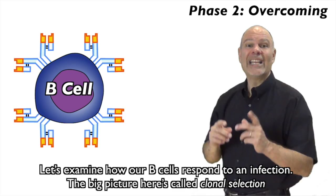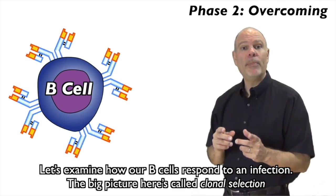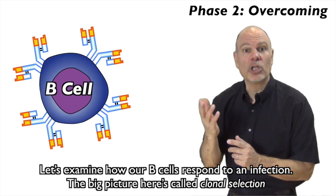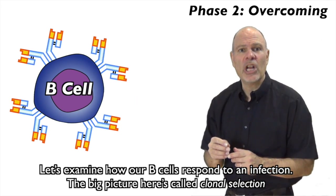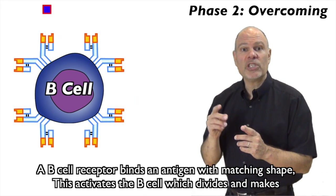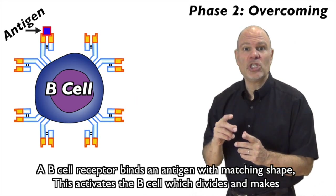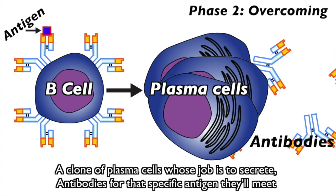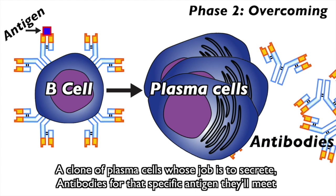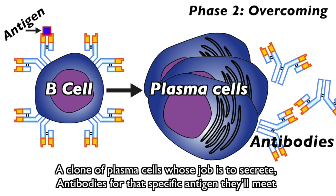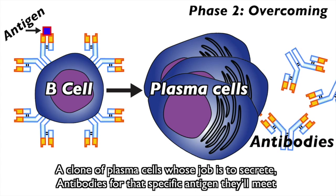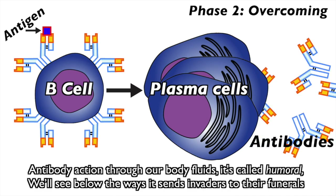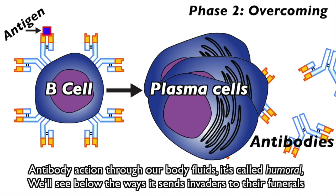Let's examine how our B-cells respond to an infection. The big picture here is called clonal selection. A B-cell receptor binds an antigen with matching shape — this activates the B-cell, which divides and makes a clone of plasma cells whose job is to secrete antibodies for that specific antigen they'll meet. Antibody action through our body fluids is called humoral immunity — we'll see below the ways it sends invaders to their funerals.